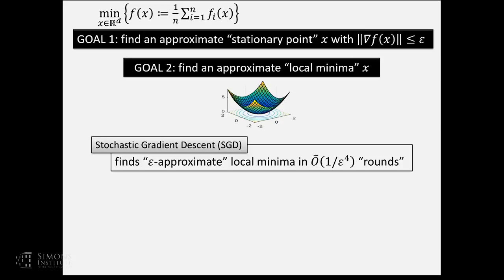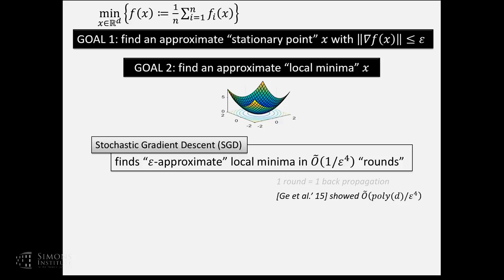Stochastic gradient descent finds an epsilon approximate local minima in one over epsilon to the fourth power rounds. Throughout this talk, by one round I mean one back-propagation: given a neural network and an input, you do back-propagation on just that input. This result was essentially first shown by Rong Ge et al., although in their current archive version they prove poly-dimension over epsilon to the fourth; the authors are working to remove the poly-d factor.